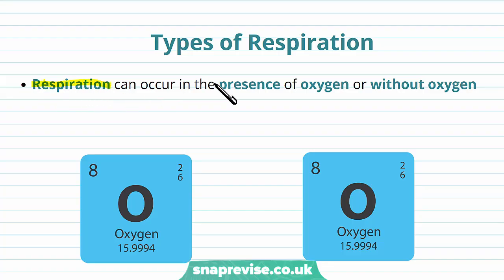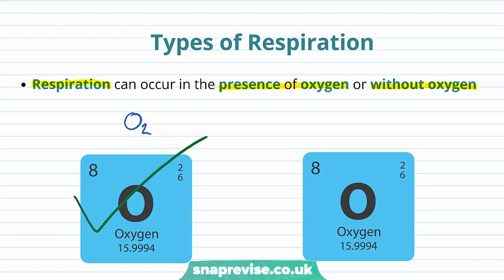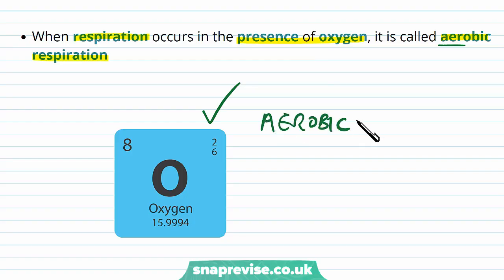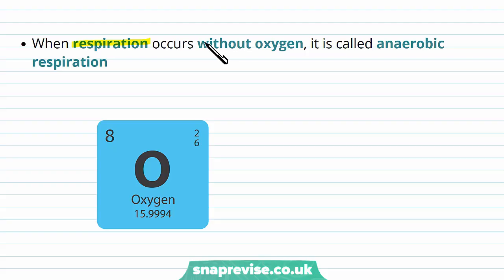Respiration can happen whether there is a presence of oxygen or if there isn't the presence of oxygen — it can occur both with and without oxygen. Oxygen exists as a gas in the environment, with the formula O₂, and respiration can occur if it's present or absent. When respiration occurs in the presence of oxygen, we call this aerobic respiration, because when oxygen is present it's almost describing the fact that there is air. However, when respiration occurs without oxygen, we call it anaerobic respiration.